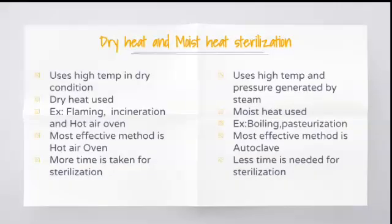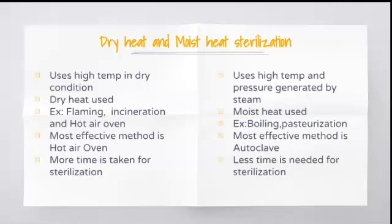The next question is: what is the difference between dry heat and moist heat sterilization? Dry heat uses high temperature in dry condition whereas moist heat sterilization uses high temperature and pressure generated by steam. Examples of dry heat sterilization are flaming, incineration, and hot air oven, whereas moist heat sterilization examples are boiling and pasteurization.